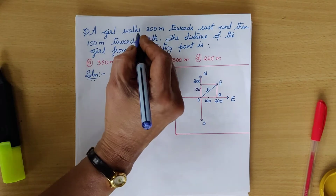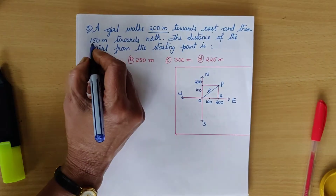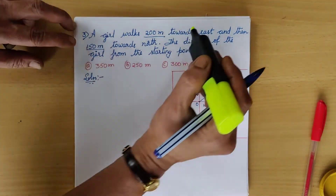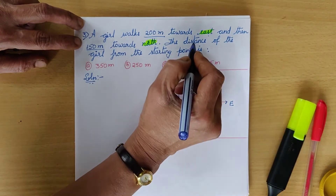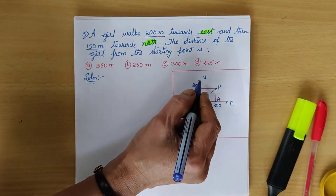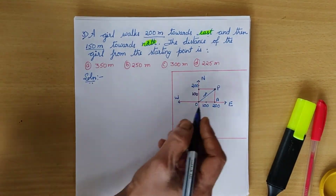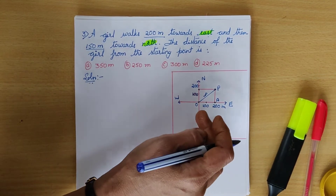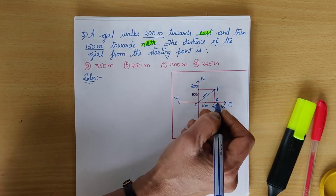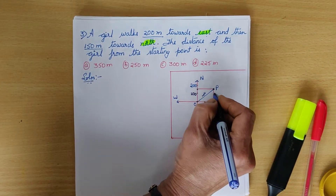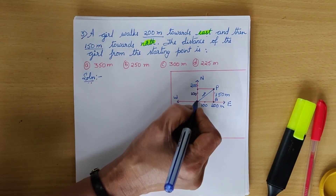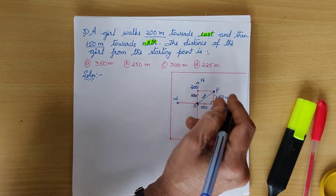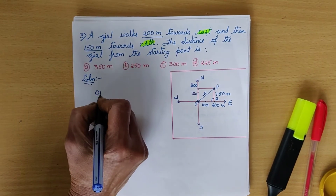Third question: a girl walks 200 meters towards east and then 150 meters towards north. We need to find the distance from the starting point. Plotting this on a coordinate system with north, south, east, west, we get a right-angled triangle with legs 200 m and 150 m. We apply the Pythagorean theorem to find OP.